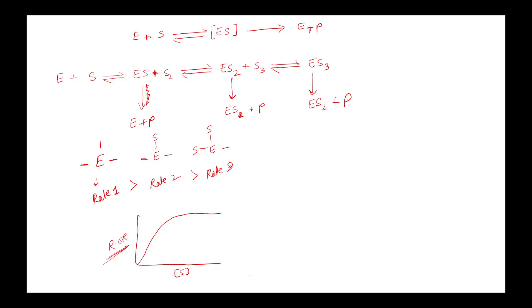Sometimes, once one substrate is bound, the binding of a second substrate increases the affinity of the enzyme for another substrate. This phenomenon is called cooperativity. In that case, the graph does not follow the normal hyperbolic shape — the rate of reaction becomes much higher because affinity increases due to conformational changes caused by binding of the first substrate.